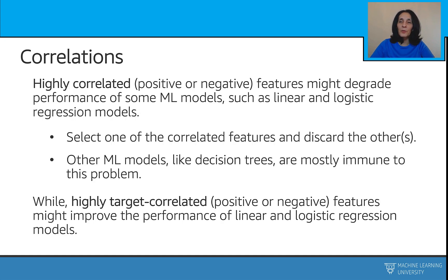Correlated features will not always worsen your model, but will not always improve it either. Using correlation matrices or scatter plots to identify correlations between features could be beneficial. Ideally, you would want to identify and remove correlated features, keeping only one of them. Dropping features improves speed and reduces the dimensionality of your model. Simpler models built on fewer features are most of the time preferable — easier to interpret and implement. If features are correlated, the ones you drop will probably not be very informative anyway, so the algorithm may not suffer much.